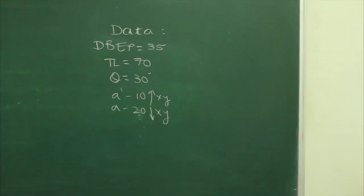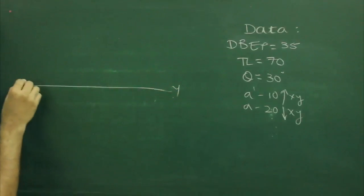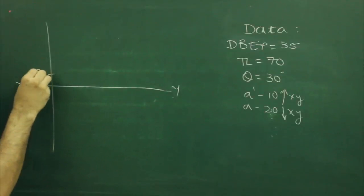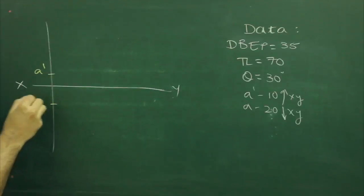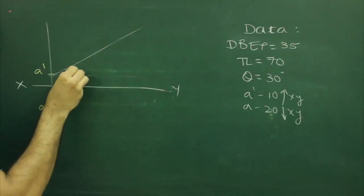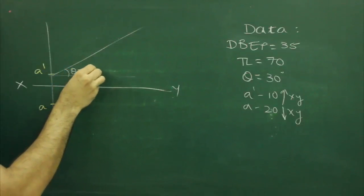Now we will draw xy line, then we will mark A dash and A. After that, we will mark angle theta, that is 30 degrees.